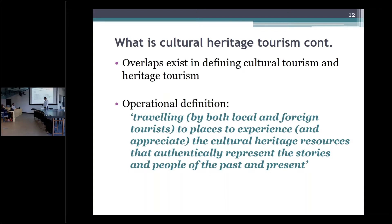The definition of cultural heritage tourism is subject to debate. Cultural heritage tourism incorporates a wide range of tangible and intangible elements. Tangible includes monuments, archaeological buildings, beaches, and forests — things we can touch. Intangible includes language and emotion — things we cannot touch. My operational definition is: travel by both local and foreign tourists to places to experience cultural heritage resources that authentically present the history and people of the past and present.